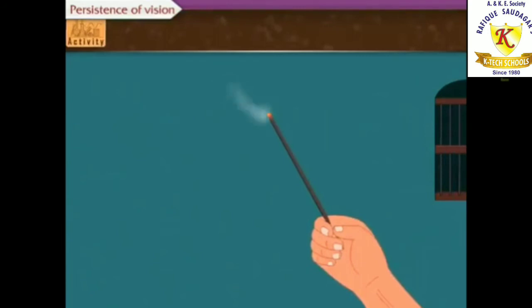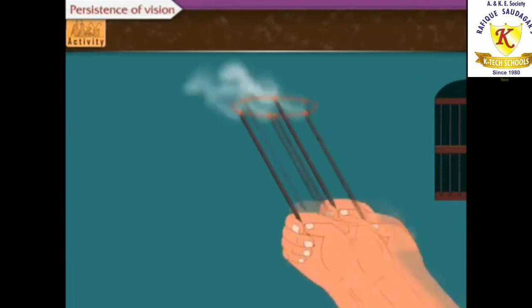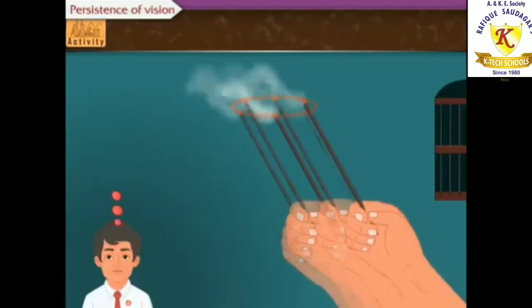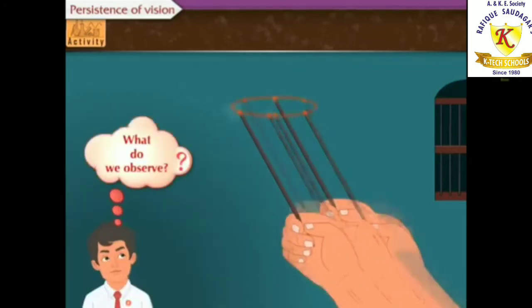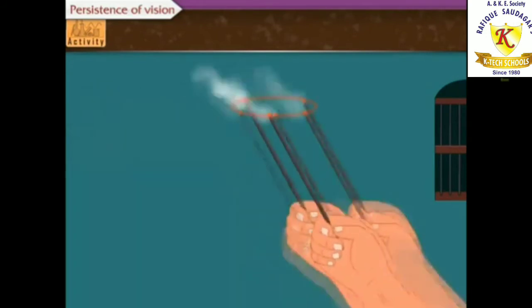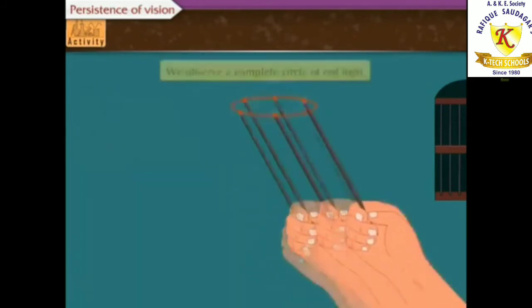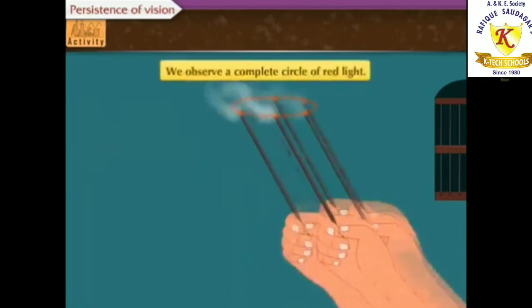Take a burning incense stick in your hand and start rotating it fast along a circle. What do we observe here? Yes, we observe a complete circle of red light.